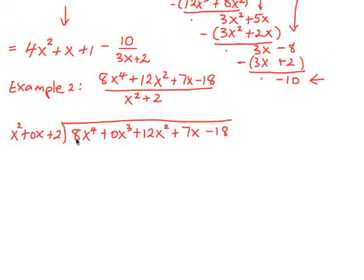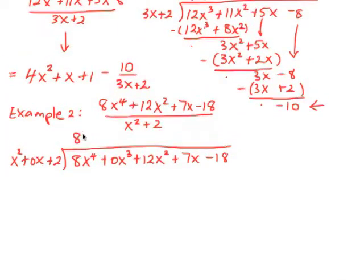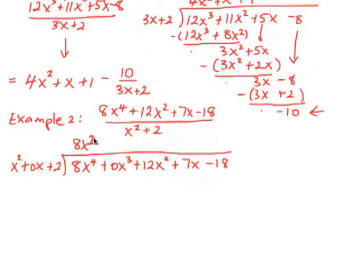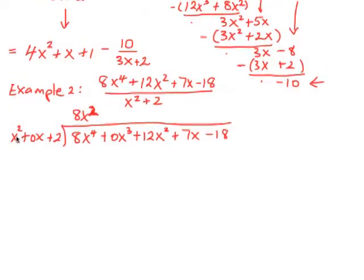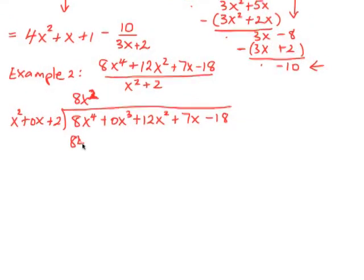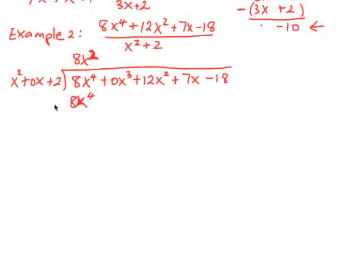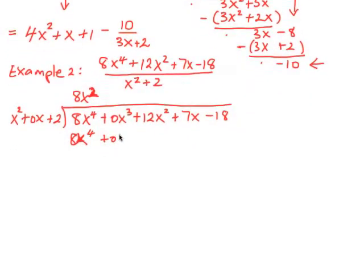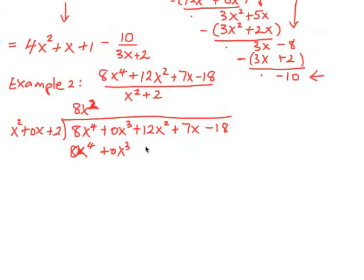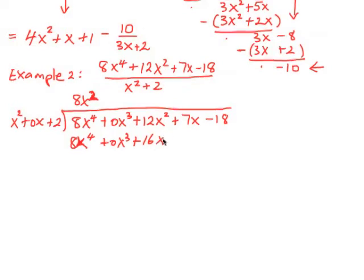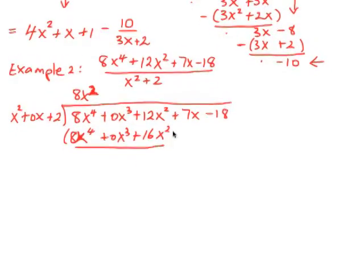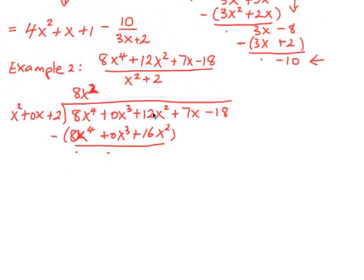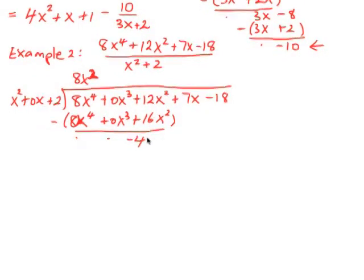Now we proceed as we did before. We say, what do we multiply x squared by to get 8x to the 4? Well, it will be 8x squared. So we're going to have x squared by 8x squared is 8x to the 4. And then we do 0x by 8x squared, which is 0x cubed. And then we get 2 by 8x squared, which is going to give us 16x squared. Put a line under it and we're going to subtract. 8x to the 4 minus 8x to the 4 is 0. 0 minus 0 is still 0. And now we have 12x squared minus 16x squared is negative 4x squared.